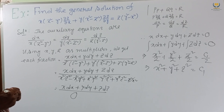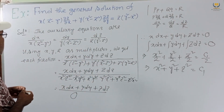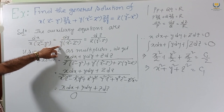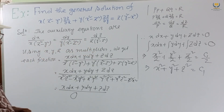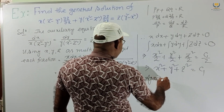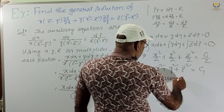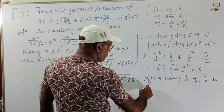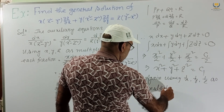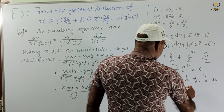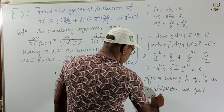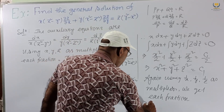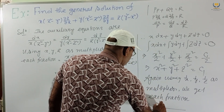Again, using 1/x, 1/y, 1/z as multipliers: multiplying the first fraction by 1/x, the second by 1/y, the third by 1/z and adding. The numerator becomes (1/x)dx + (1/y)dy + (1/z)dz and each denominator simplifies: 1/x · x(z²-y²) = z²-y², 1/y · y(x²-z²) = x²-z², 1/z · z(y²-x²) = y²-x².